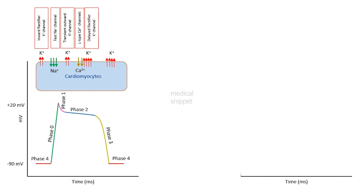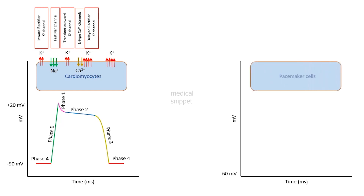Now let's see the action potential of pacemaker cells. The resting membrane potential is about minus 60 millivolts. There is continuous slow depolarization of pacemaker cells. This phase is called phase 4. It is due to sodium influx by slow sodium channels and calcium influx by T-type calcium channels.